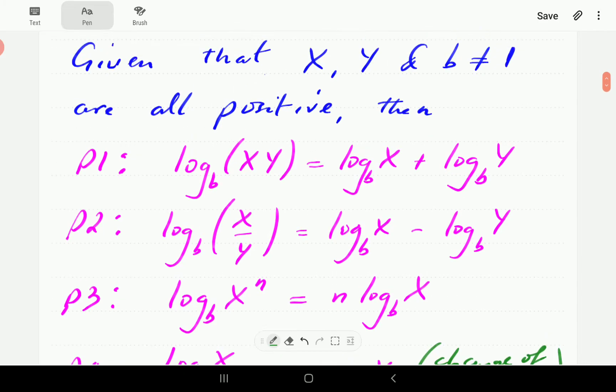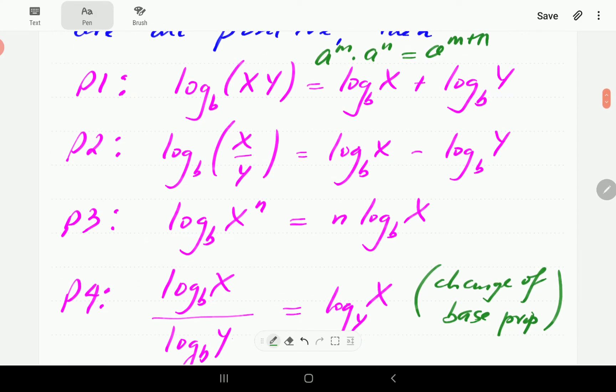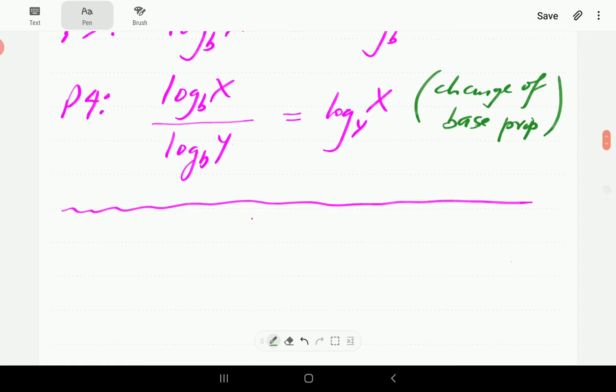Now you're going to notice that these have got some parallels between them and the laws of indices. For the first one, for instance, you might remember that a to the power m times a to the power n is equal to a to the power m plus n. So you can see what's happening here. We have got multiplication this side and then the indices we add, so the same thing here we've got addition this side and multiplication this side. And there's a similar relationship with the one where we are dividing.